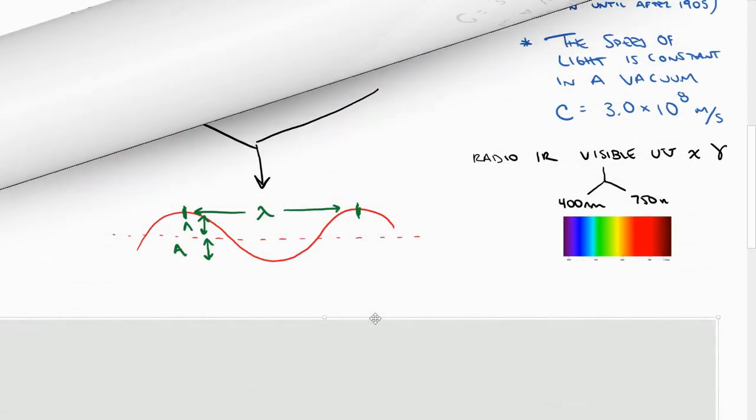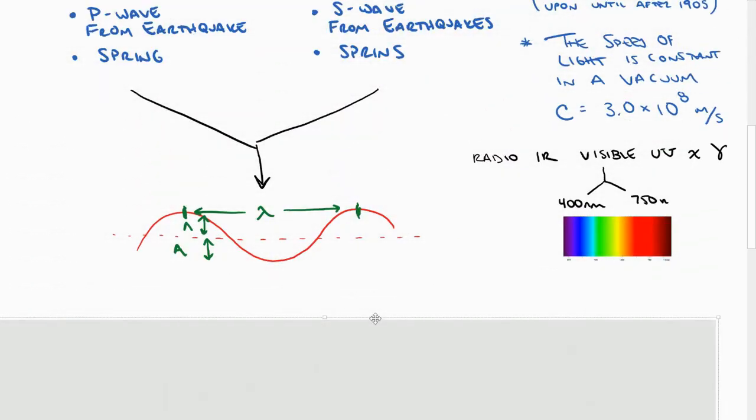All right. If I continue on, we can picture or draw, like the example that we have here, a nice sine curve, where the wavelength would be from peak to peak, or trough to trough. And the amplitude, the amplitude is actually measured just as the displacement from equilibrium. It's not the whole height. It's actually just half the height.